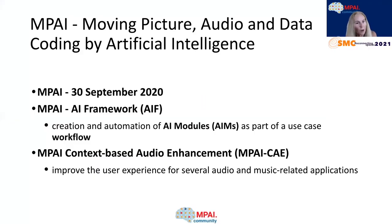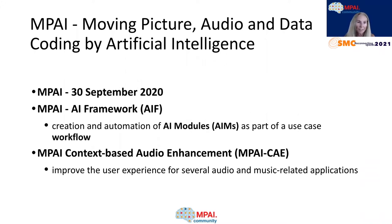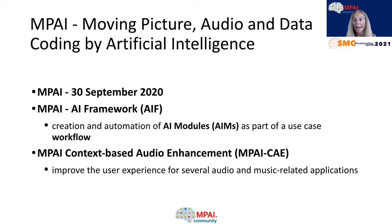MPI, which stands for Moving Picture, Audio and Data Coding by Artificial Intelligence, was established less than a year ago, in September of 2020, and it's an international non-profit organization which aims to develop standards for data coding that have AI as its core technology.